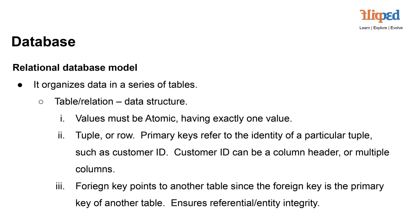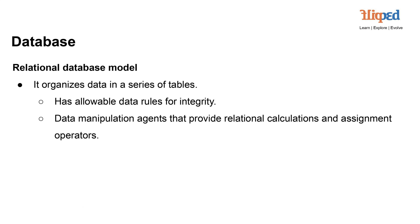Primary keys can be single columns or span across multiple columns. The dance of relationships extends further with foreign keys, intimately connecting one table to another. This profound linkage ensures both referential and entity integrity, laying a solid foundation for data coherence. A defining feature of this model is its steadfast adherence to allowable data rules, assuring the integrity of your information.